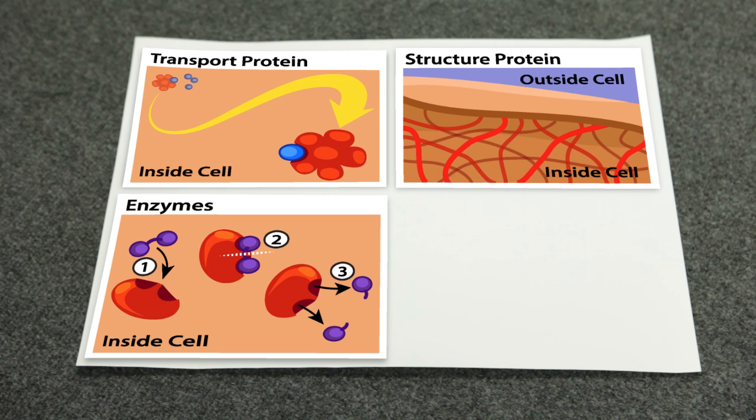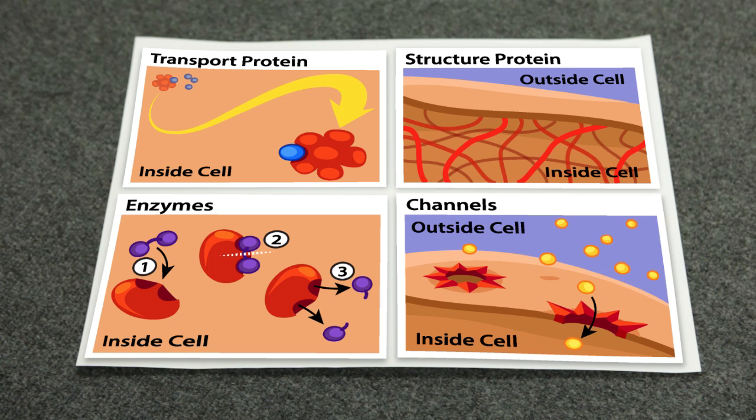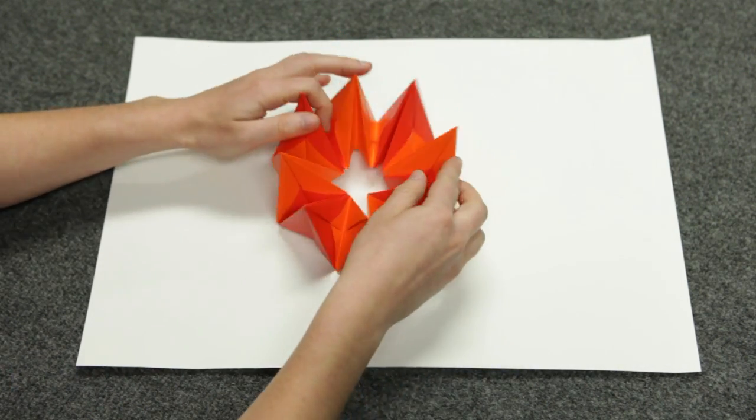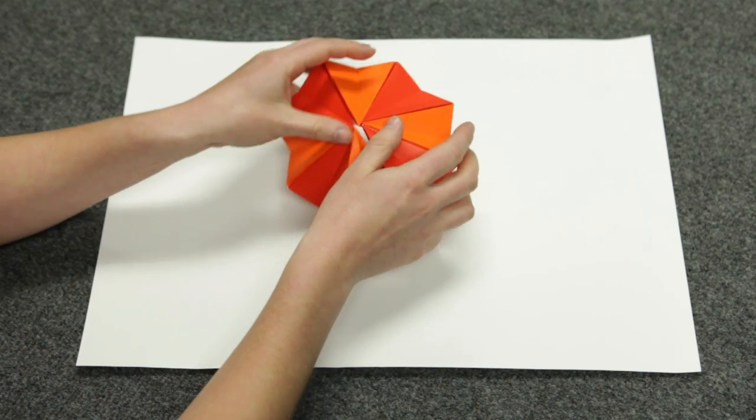The protein we're making is a channel that sits in the outer cell surface or membrane and works like a door that lets certain molecules pass through. Some channels are open all the time while others can be closed depending on signals from the cell or the environment.